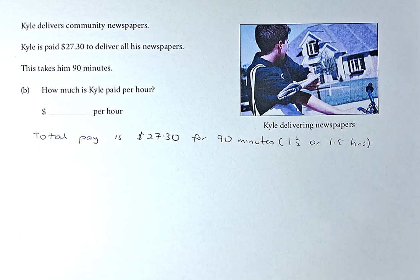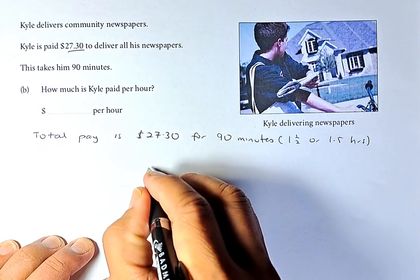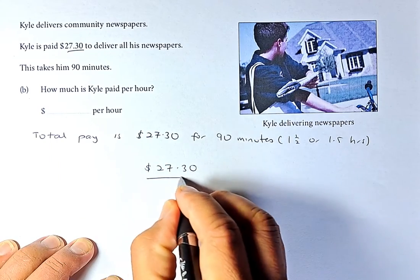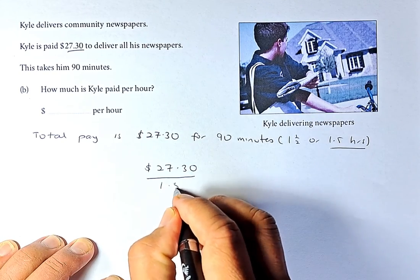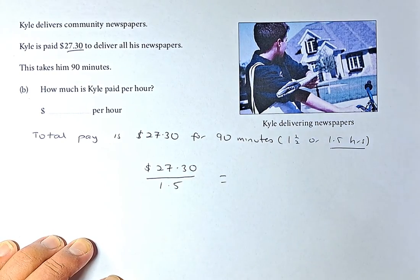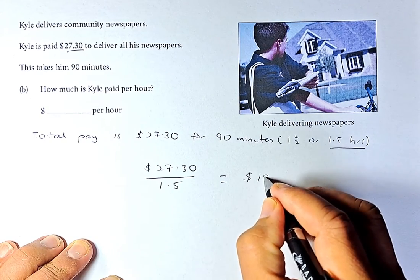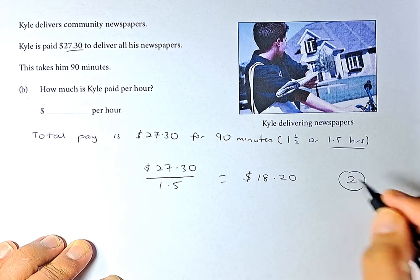Total pay is $27.30 for 90 minutes or 1.5 hours. To calculate how much Kyle is paid, very simple: you take this amount, $27.30, and then divide by total number of hours worked, 1.5 hours. Put it in the calculator, and the answer is $18.20. That will give you Outcome 2.